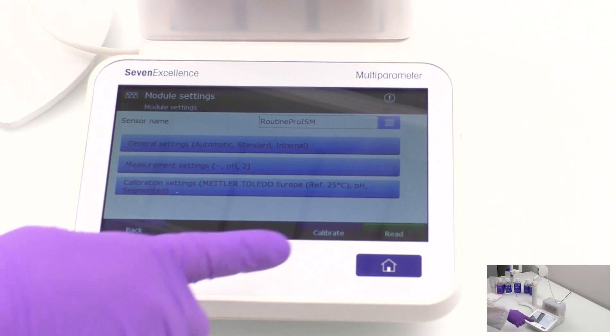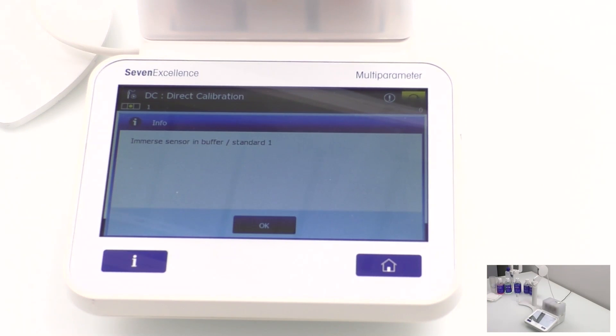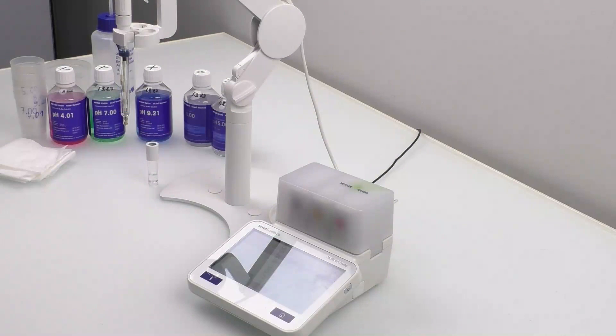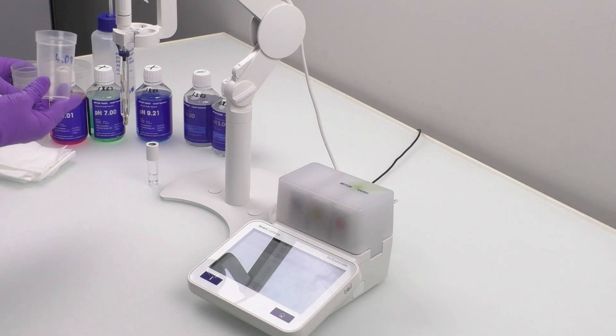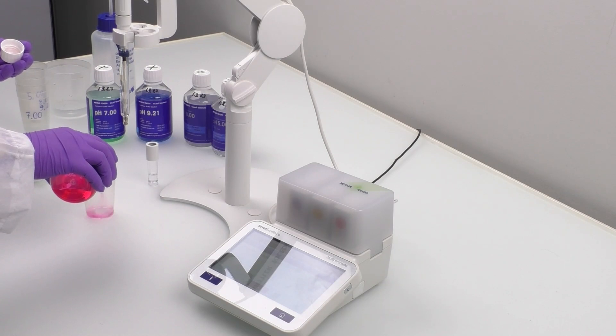Now, it's time to press calibrate to set the meter ready for the first standard. You will see a pop-up prompting you to immerse the sensor in the first standard. To start, prepare an aliquot of pH 4.01 in an empty and pre-labeled beaker. Pour about 40 milliliters into the beaker and close the bottle before setting it aside.